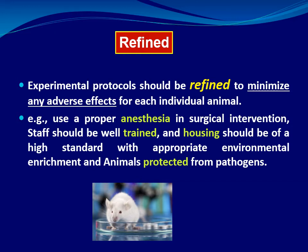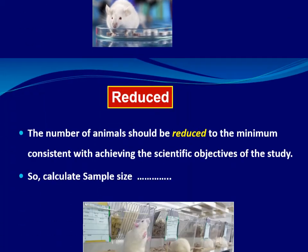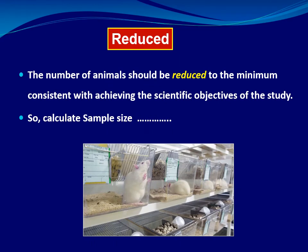The second R is Refine: the protocol should be refined to minimize any adverse effects for individual animals. This means using proper anesthesia in surgical intervention, ensuring staff are well trained, maintaining high standard housing, and protecting animals from pathogens. The third R is Reduce: the number of animals should be reduced to the minimum needed to achieve the scientific objectives. Too many animals means unnecessary loss; too few means loss of data. We should calculate sample size.